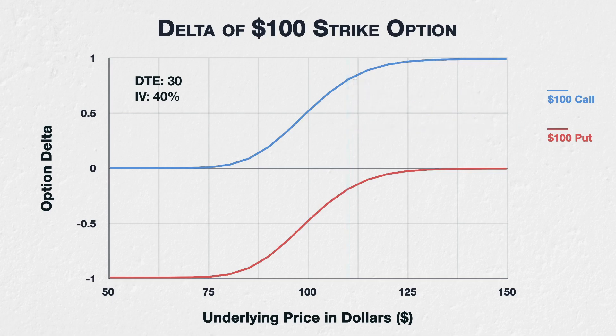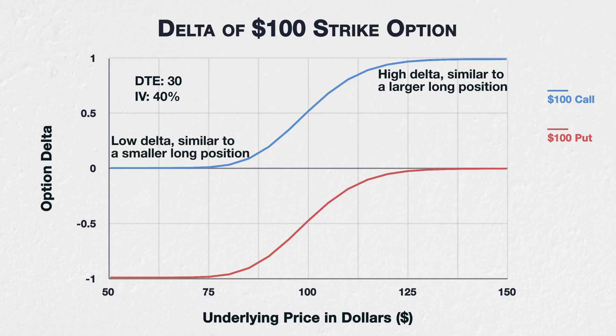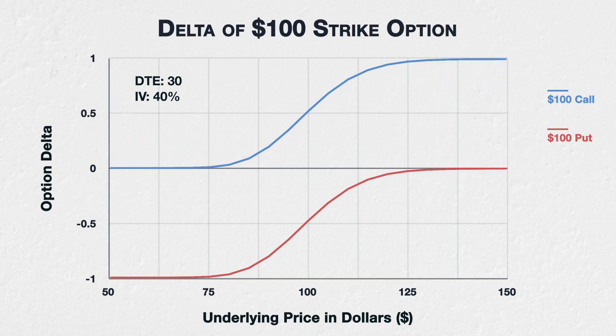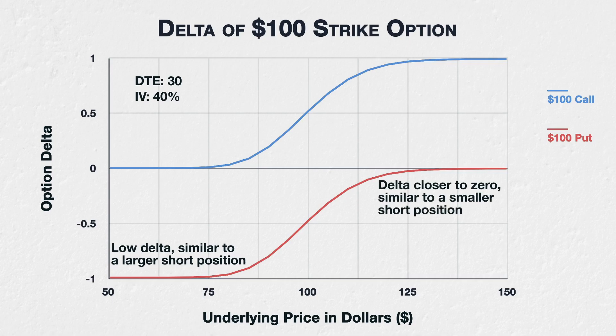What this means is that when we are long a call option, as the underlying price increases, our effective long position gets larger, and as the underlying price decreases, our effective long position gets smaller. This is an attractive property to have, and is brought about by the change to delta as price moves — i.e. the gamma. Similar behaviour can be observed if we are long a put option. As the underlying price decreases, our effective short position gets larger, and as the underlying price increases, our effective short position gets smaller.